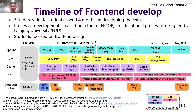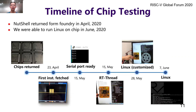There are three milestones in the development process. We were able to run RT-Thread, a real-time operating system, on October 21st. Then Linux executed normally in simulation on November 21st. Finally, in December, we were able to run Debian in simulation. The chips returned from the foundry in April 2020. It was in the middle of May that we got the first character output. It was also on that day we were able to run RT-Thread on the chip. And in June, we were able to run Linux on the test board.